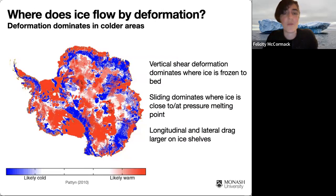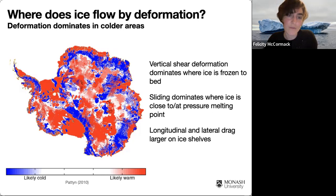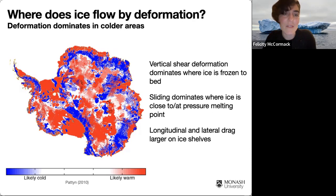Where does ice flow by deformation and where does it flow by sliding? We expect deformation to be the dominant contributor to the overall surface speed in regions where the ice is frozen to the bed, or where we expect to see bed parallel vertical shear deformation. This is represented in the figure of estimated basal temperatures from Pattyn 2010, where the blue areas indicate where the ice may be frozen — key areas to look at if we want to find where ice is flowing by deformation. A caveat here: this is an estimate from an ice sheet model, and estimating where the ice is frozen or thawed can be a function of the flow relation, particularly through the temperature-dependent flow parameter.